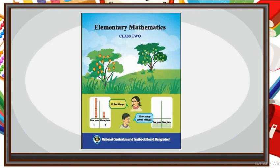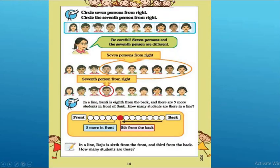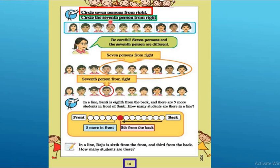Okay, my dear students. Take out your elementary mathematics book and open page number 14. Look at this activity. The first one: circle 7 persons from the right. And the second one: circle the 7th person from the right. Be careful — '7 persons' and 'the 7th person' are different.